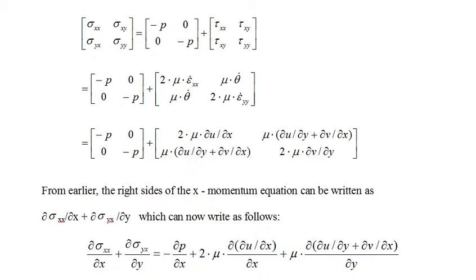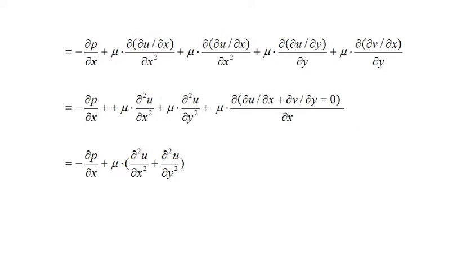All that remains is to simplify this expression. The first equation is the equation from the previous slide expanded. The second line is obtained by reversing the order of differentiation for the second-order partial derivative of v with respect to x and y, and then applying the continuity equation to eliminate two of the terms. And finally we have the right-hand side of the Navier-Stokes equations.